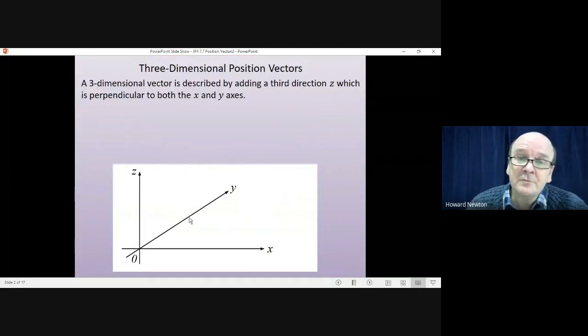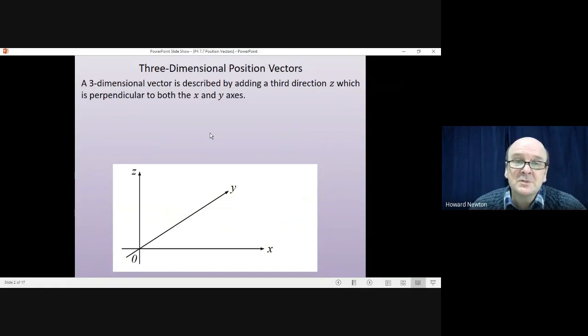First of all, three-dimensional vectors are described by adding a third direction z, which is perpendicular to both the x and y axes. So in this diagram, the x and y axes would define a horizontal plane, and z would be vertically upwards from that plane.